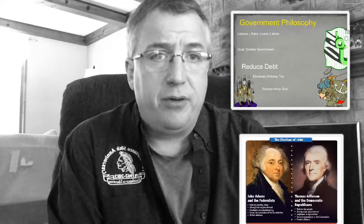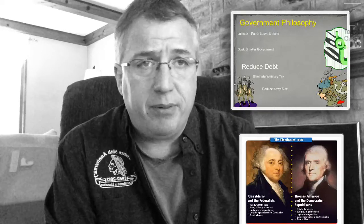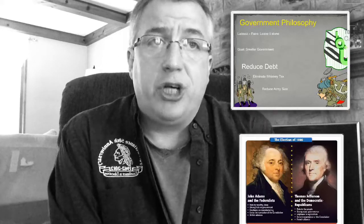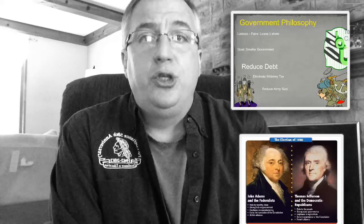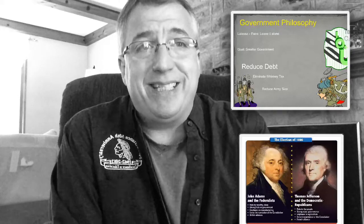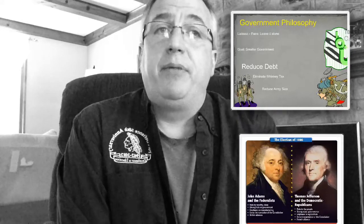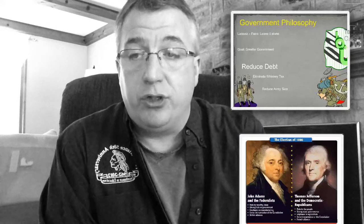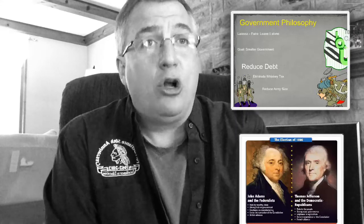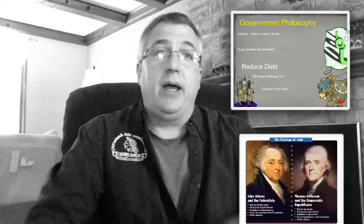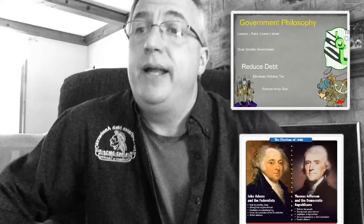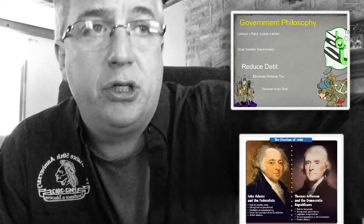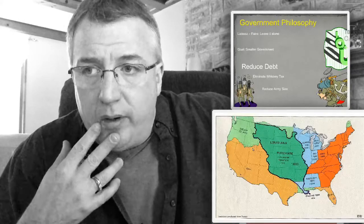Some things to remember about Jefferson: before he was president, he was the father of the Democratic-Republican Party. He's a strict constructionist, meaning the government can only do what the Constitution explicitly says it can. He believes in a laissez-faire approach to the economy, meaning the government keeps a hands-off approach. He wants an agriculturally-based economy, and most of his supporters are in the South. Now, when he becomes president, things are going to change a little bit — he purchases Louisiana from France.